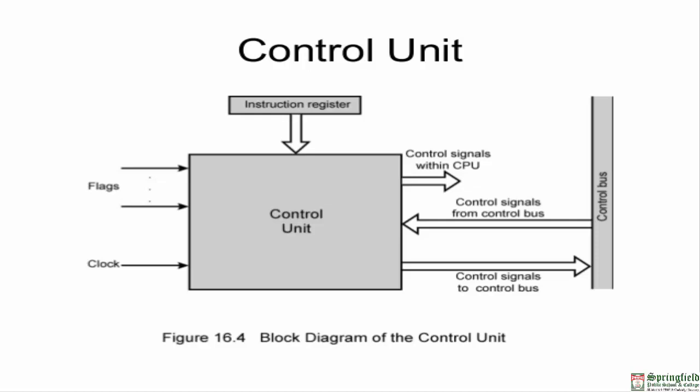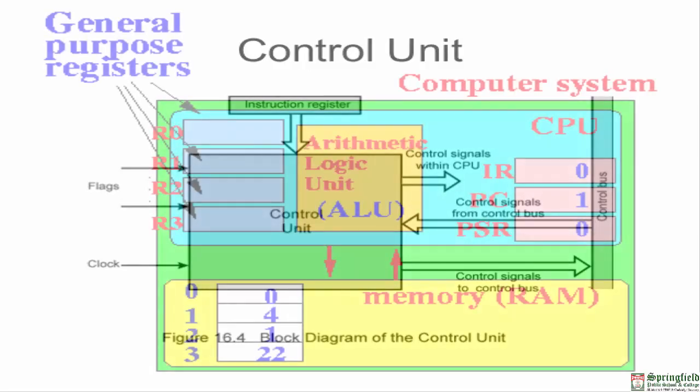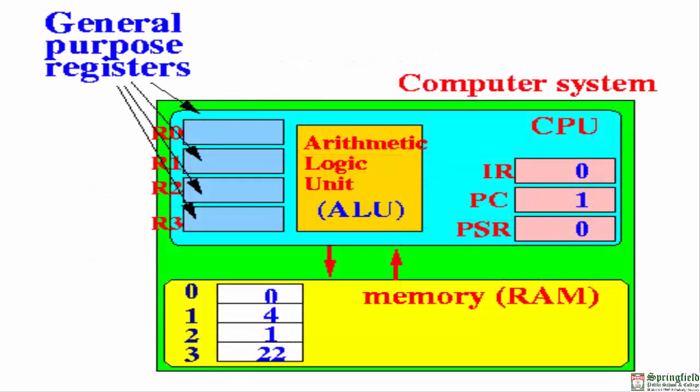The control unit controls the working of all input/output devices, storage devices, and the ALU. Registers are small memory units inside the microprocessor used to temporarily store information during the execution of a program. Common registers include the instruction register, accumulator register, data register, and memory address register.